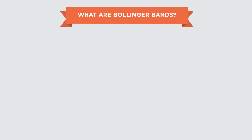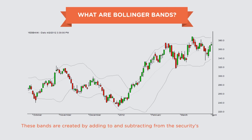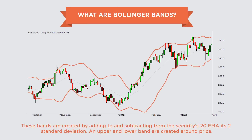So what are Bollinger Bands? This chart of Yes Bank is overlaid with the Bollinger Bands — those two bands right around price. These bands are created by adding to and subtracting from a security's 20-period exponential moving average and its two standard deviations, creating an upper and a lower band respectively. You don't need to worry about how this is calculated because most software will do it for you. The two bands envelope the price, making it easier to spot the volatility.